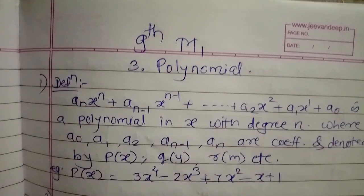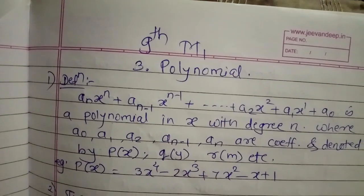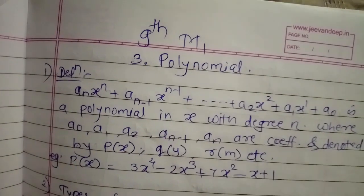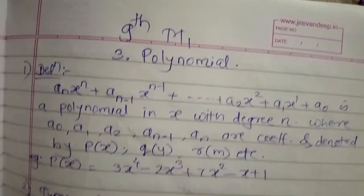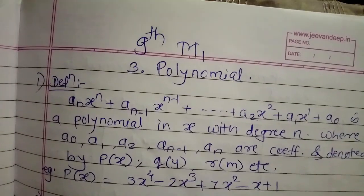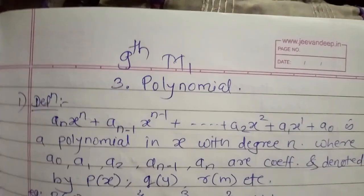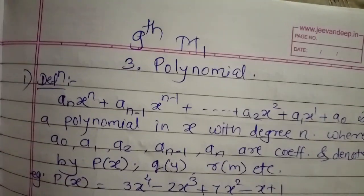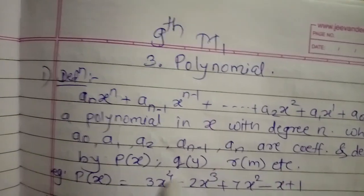Hello students and welcome to 9th standard. In previous year, 8th standard, there was one book for mathematics, but in 9th standard there are two books for mathematics. The first one is algebra, which is M1, and the second book is geometry, that is M2. Today we are going to start the third chapter of M1, that is polynomial.